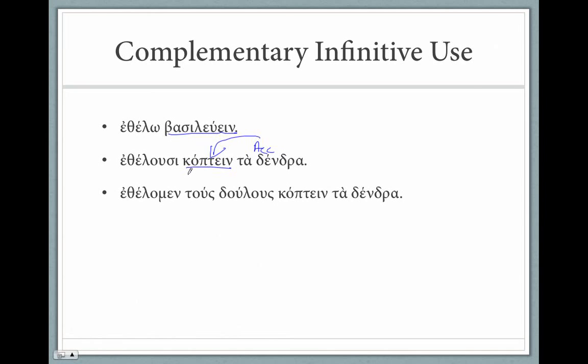These infinitives can also have a subject. But with infinitives, the rule is, the subject of an infinitive is in the accusative. Ethelomen, we want. What do we want? Tous doulous koptein. We want the slaves to chop down. This accusative is the subject of koptein. We want the slaves to chop down the trees. So this accusative is the direct object of koptein. This accusative is the subject of koptein.